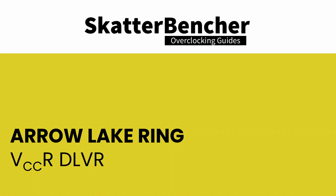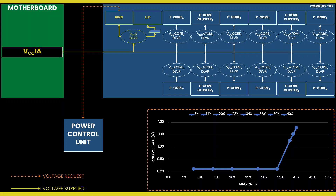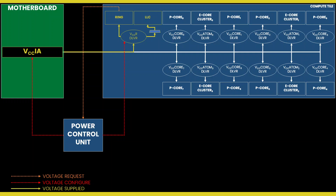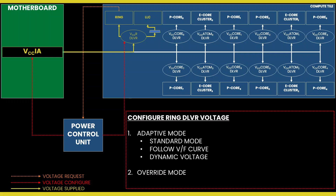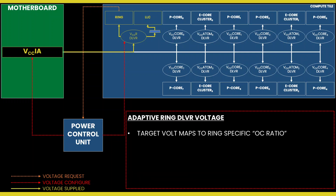Based on the ring VF curve, the ring requests an operating voltage using the ISVIT protocol from the CPU Power Control Unit (PCU). The PCU in turn configures the VCCIA voltage rail and the VCCR DLVR. There are two ways to configure the voltage: adaptive mode or override mode. Adaptive mode is the standard mode of operation, which relies on the factory fused voltage-frequency curves. Override mode specifies a single static voltage across all ratios, mainly used for extreme overclocking where stability at high frequencies is the only consideration.